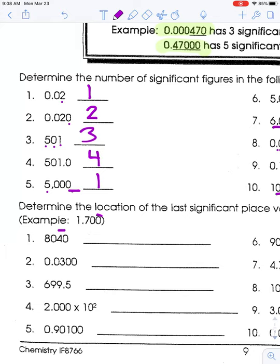Number two: 0.0300 — the leading zero is not significant, but the three is, and so are the trailing zeros, so we put the bar over the last zero. Number three: 699.5 — all digits are one through nine, so the bar goes over the five as the last significant figure. Number four: 2.00 × 10² — scientific notation; we look at 2.00 and put the bar over the last zero, because trailing zeros after a decimal point are significant. Number five: 90.100 — trailing zeros follow a decimal point, so they are significant; we put the bar there.